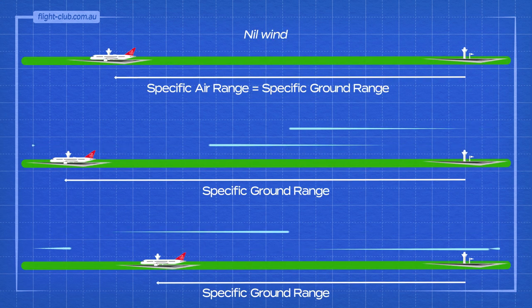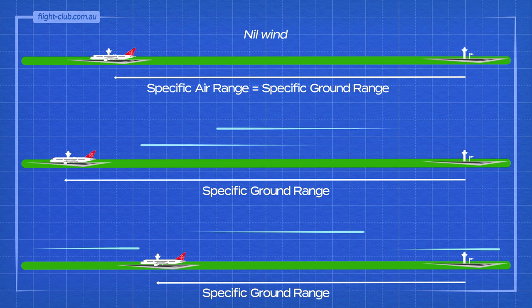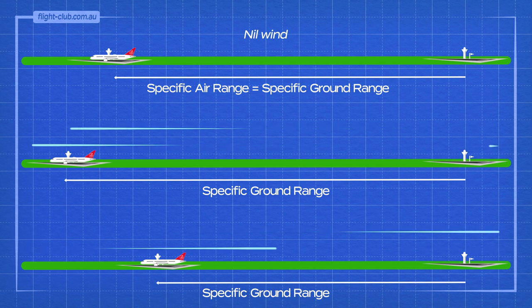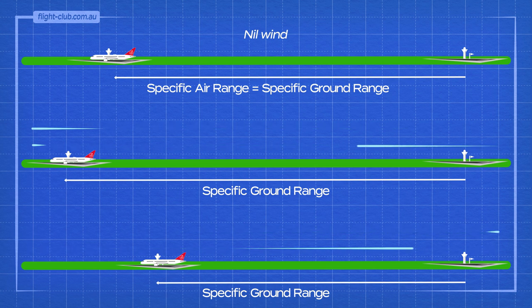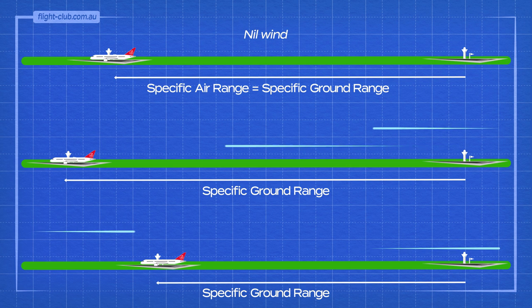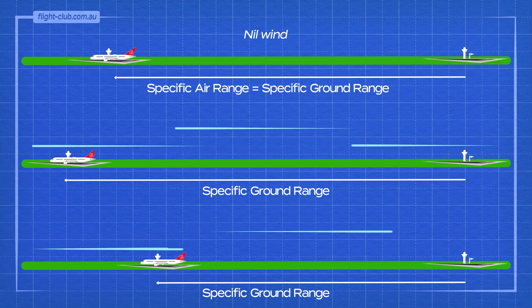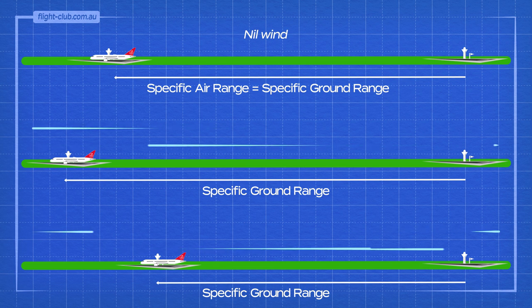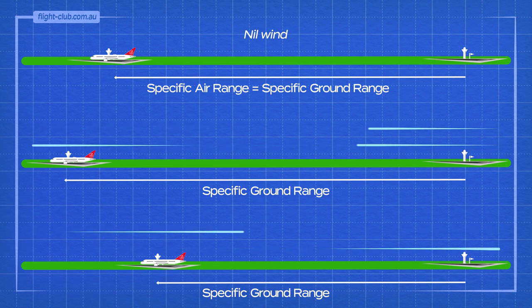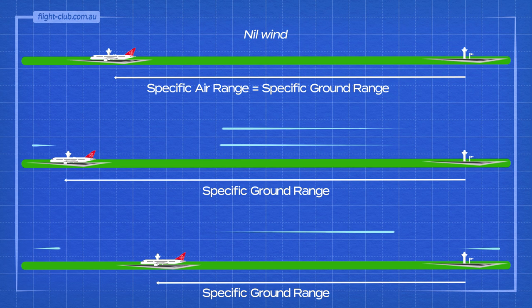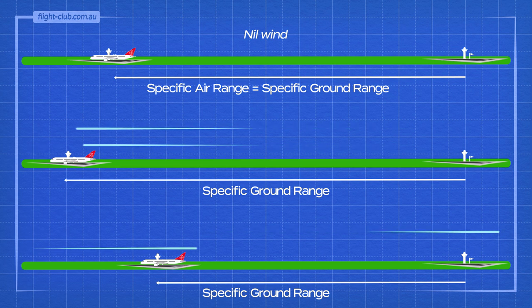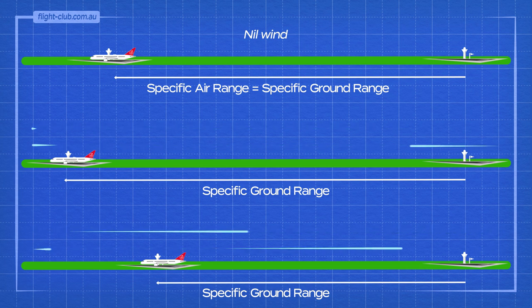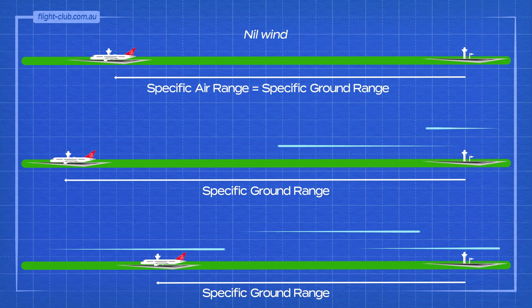Specific range can be expressed in two ways: as specific air range, which refers to the number of air miles flown per unit of fuel used; or, if there is wind to be considered, specific range can be expressed as specific ground range, which refers to the number of ground miles flown per unit of fuel used.